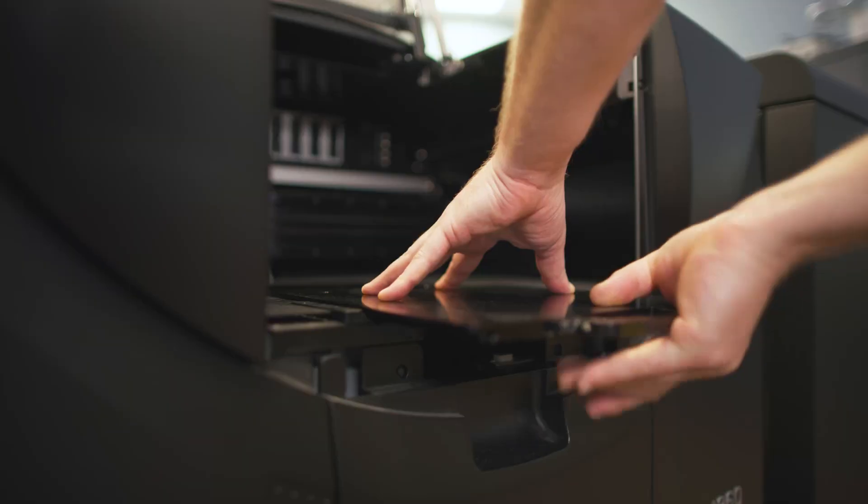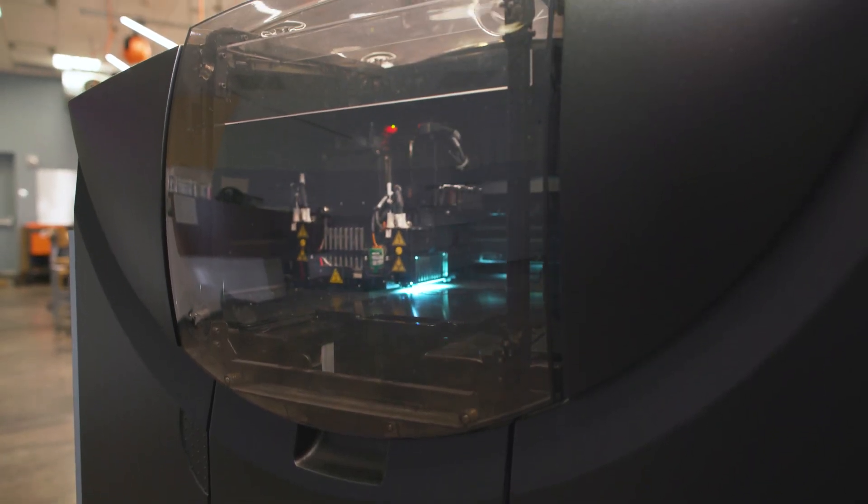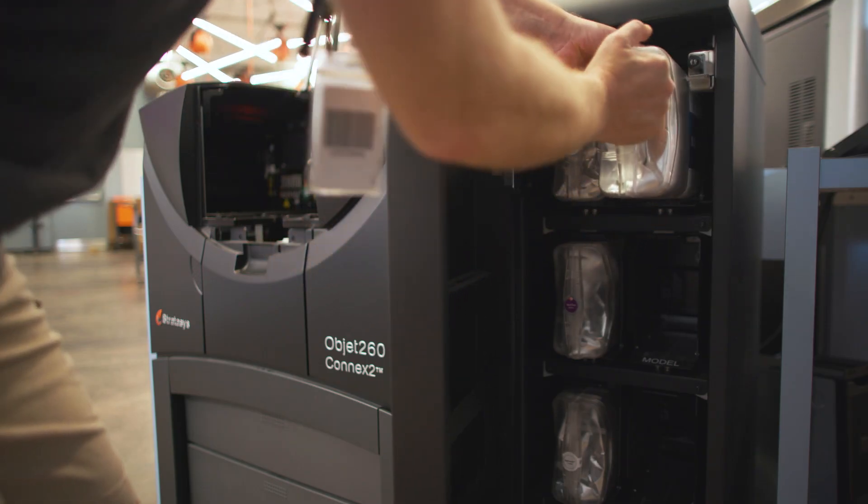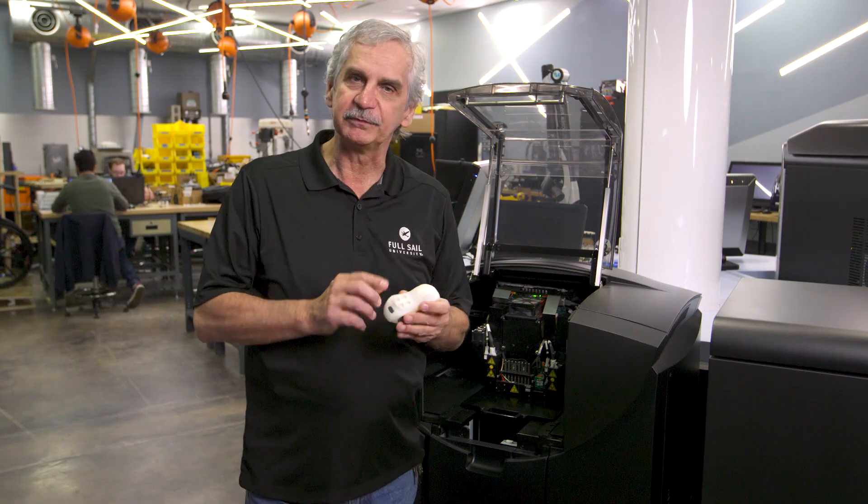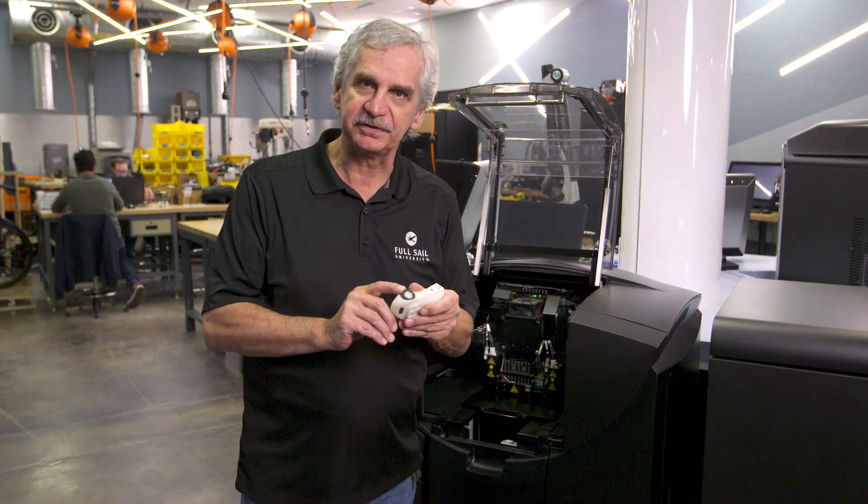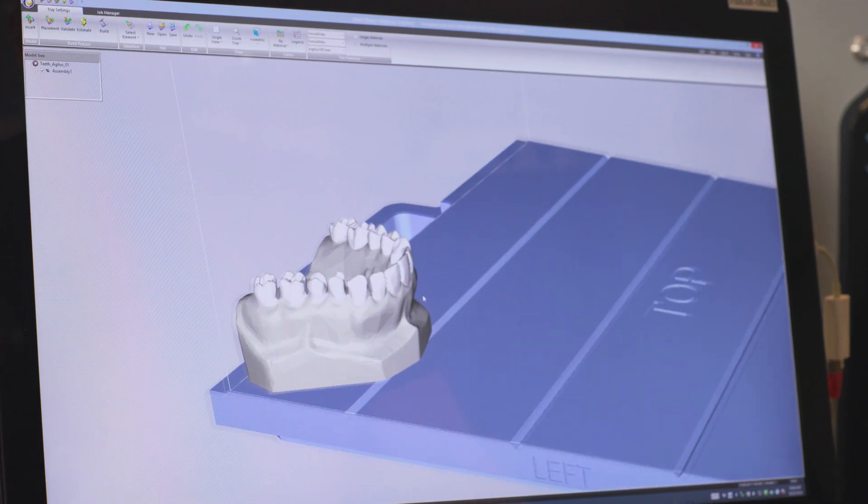This is our resin printer and what makes this special is it prints with 200 materials, three at one time, digitally mixable and hot swappable. What that means is we can print with a hard material and a soft material at the same time, but we can also digitally mix those two materials together to get a material somewhere in between.